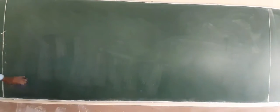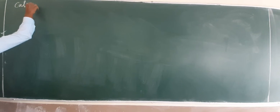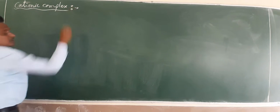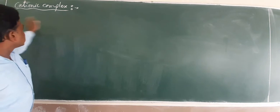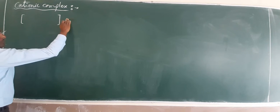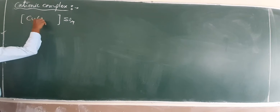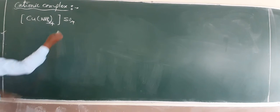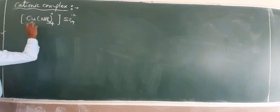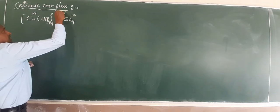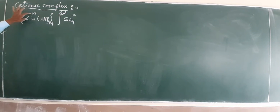Let us start with a cationic complex. Take the example [Cu(NH3)4]SO4. Finding the oxidation state: SO4 is minus 2, ammonia is 0, so the net charge gives copper an oxidation state of plus 2. This is a cationic complex with copper in the +2 oxidation state.